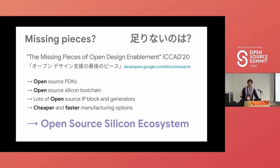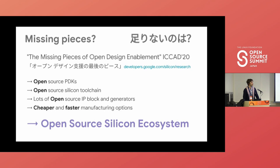My team, about two years ago, released a paper at ICCAD 2020 about the missing pieces of open design enablement. There's also a version of that paper in Japanese on developers.google.com/silicon/research. Basically it came out with the following assumption: in the current hardware design world, in order to enable co-designing software and hardware and having software engineers build custom silicon, there are missing pieces.